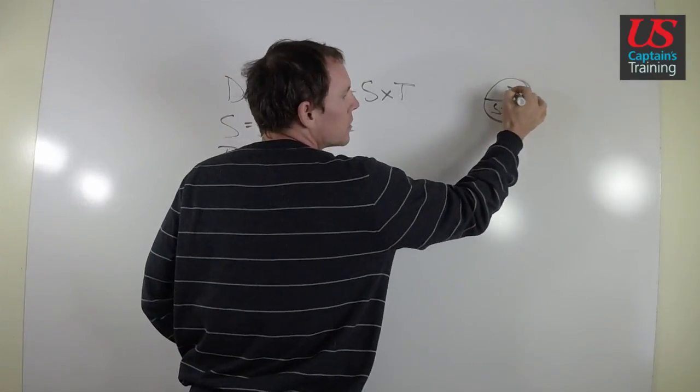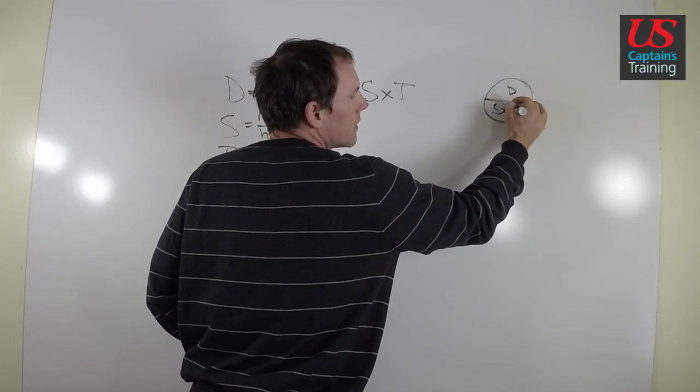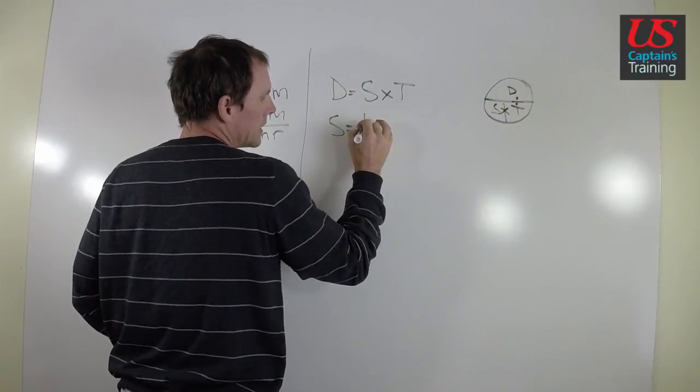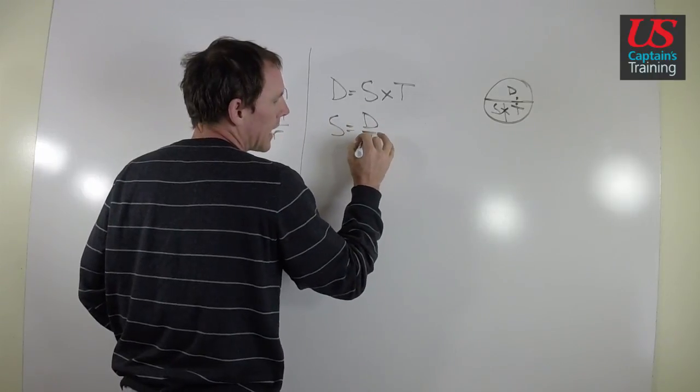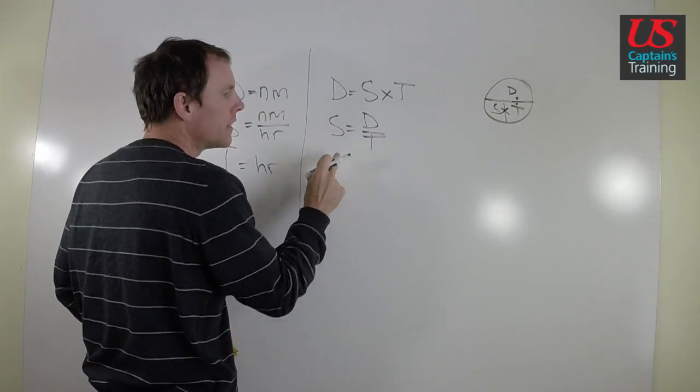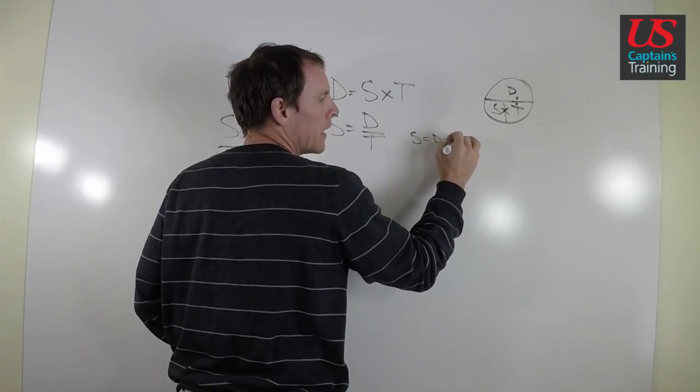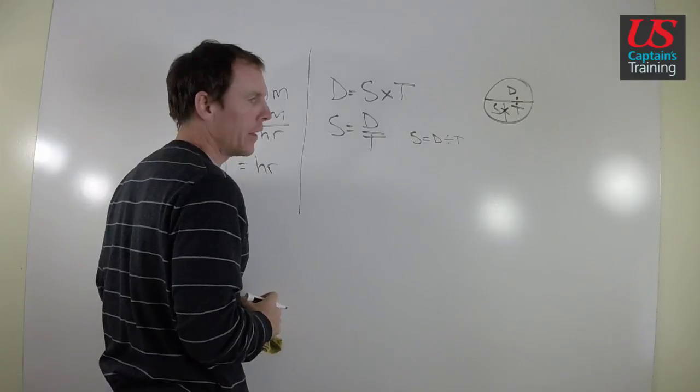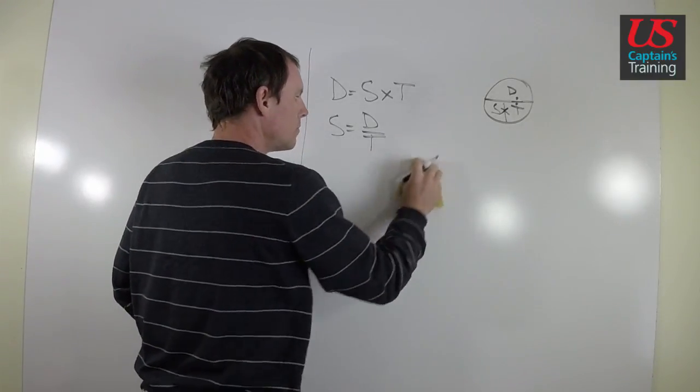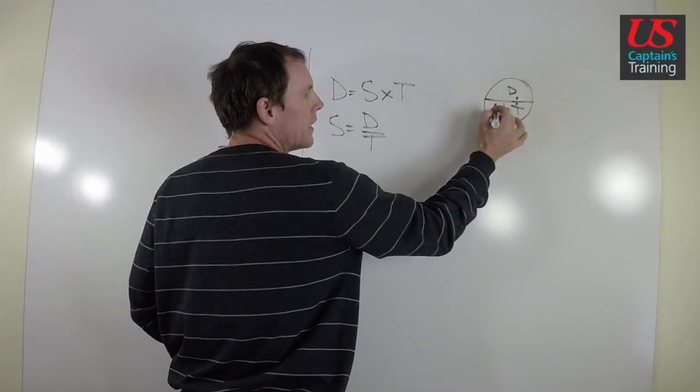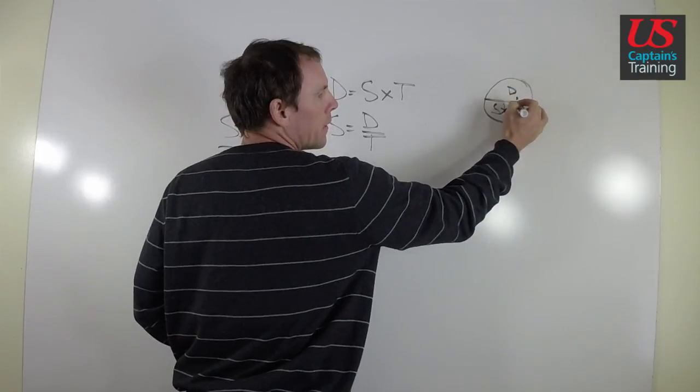Speed is equal to distance divided by time. I draw it like a fraction. This is the same thing as saying speed is equal to distance divided by time, if you're more comfortable with that.